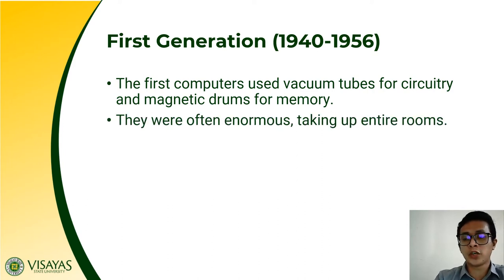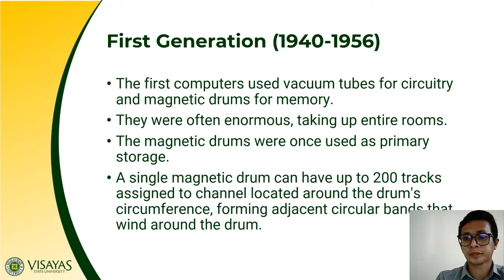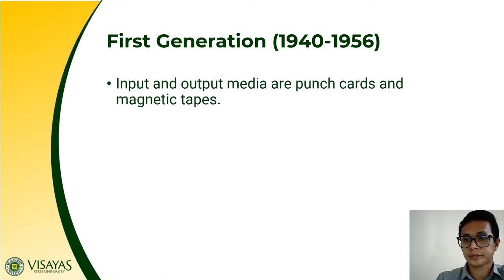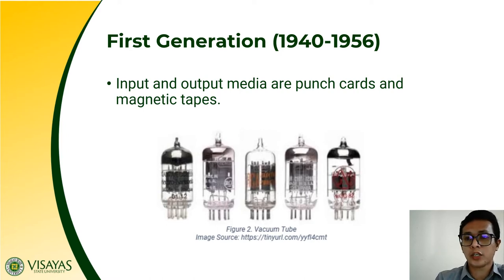These computers were often enormous, taking up entire rooms. Magnetic drums were once used as primary storage, and a single magnetic drum could hold up to 200 racks arranged around the drum's circumference, forming adjacent circular bands. Input and output media were punch cards and magnetic tapes. Take note that in the first generation computers, it was not a single vacuum tube — there were thousands of vacuum tubes put together in order for the computer to work.